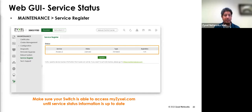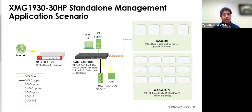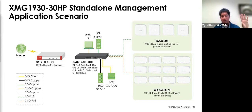In the user interface, you'll see the device is licensed with the standard license and has no expiration date, so you have full access to all those features. For typical standalone management with this switch: access points, servers, 10 gig storage devices, Wi-Fi 6E access points powered up by this device — then you have your firewall doing all the WAN connectivity and security platform, ransomware blocking, etc. to the internet. Even though you have a Layer 3 activated XMG, you would still want a security firewall to do your DHCP, DNS, and all that usual WAN interface.